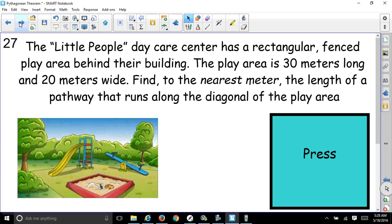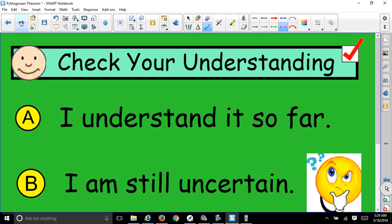Here's a question for you about the Little Pony Daycare Center. It has a rectangular fenced play area behind their building. Find, to the nearest meter, the length of a pathway that runs along the diagonal of the play area. So this is a good question, and you need to know what a diagonal is. So let me just get my line tool one more time and draw a diagonal. It goes from one corner to the opposite corner, and there is your diagonal. So hopefully you should be able to realize what is the length of this pathway here. So check your understanding. If you understand it so far, great. If you don't, write down your questions.